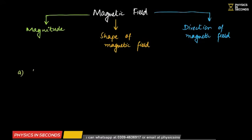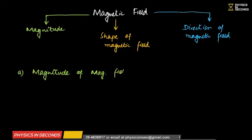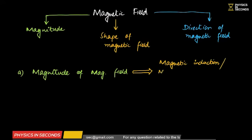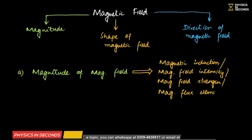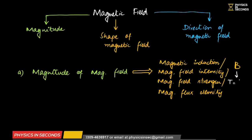The magnitude of magnetic field is represented by the physical quantity called magnetic induction. It is also known as magnetic field intensity, magnetic field strength, or magnetic flux density. Its symbol is capital B, its unit is Tesla (T), which equals Newton per Ampere per meter. In CGS system, the unit is Gauss, where 1 Tesla = 10⁴ Gauss.